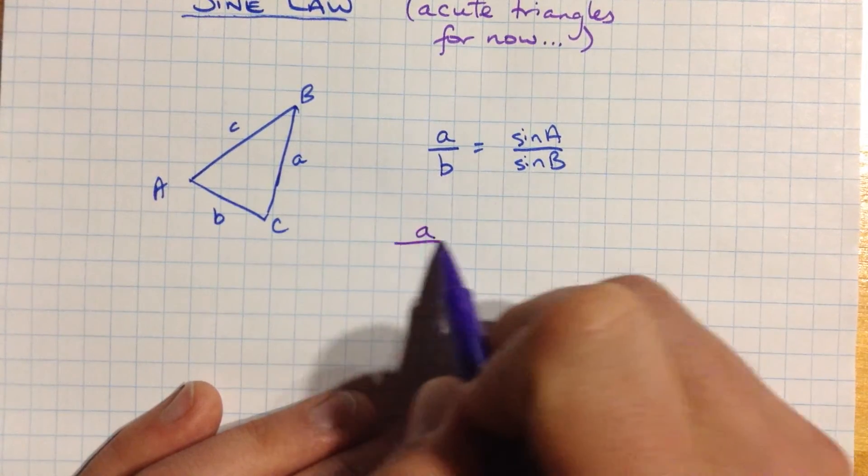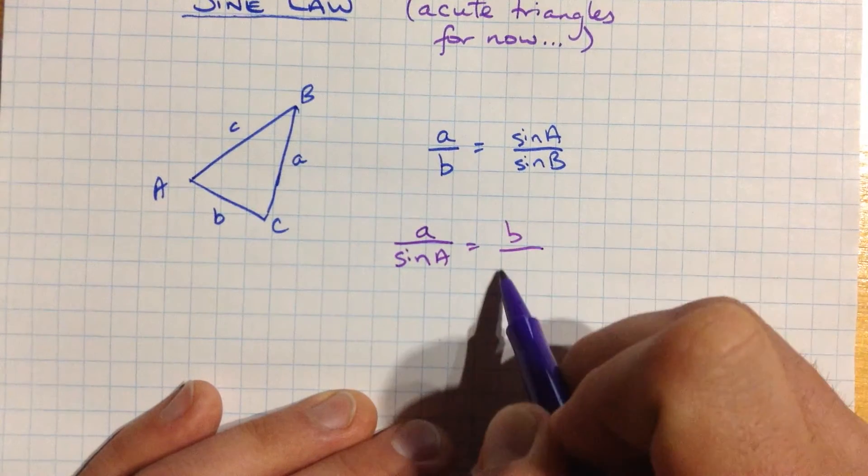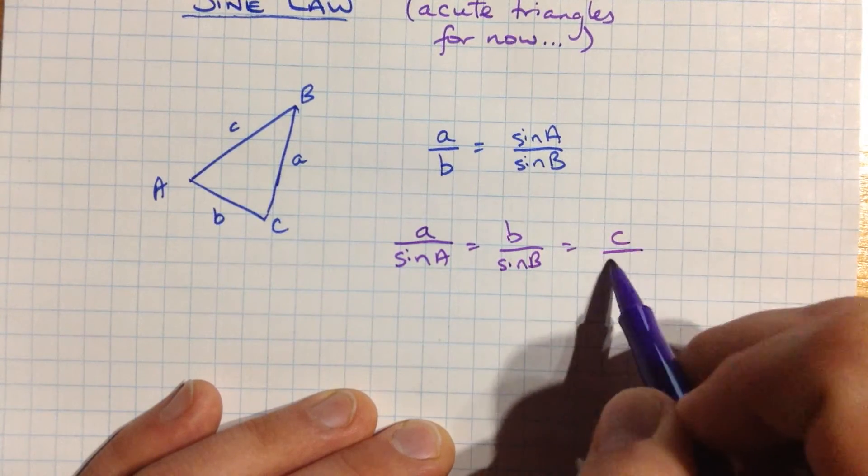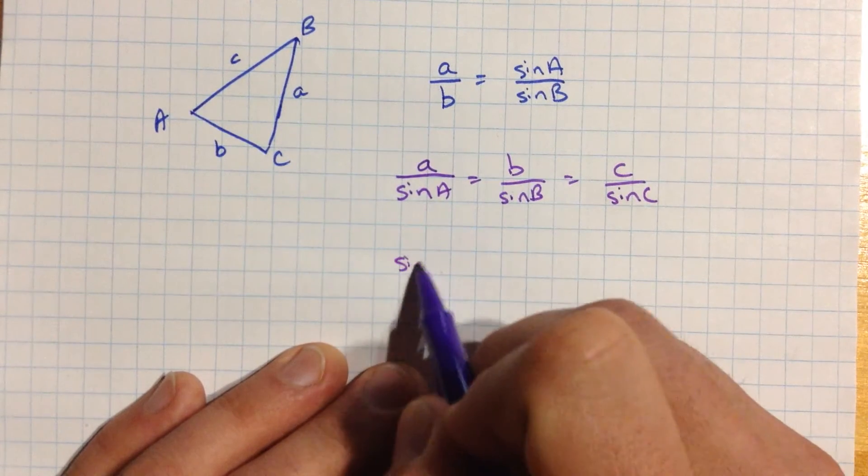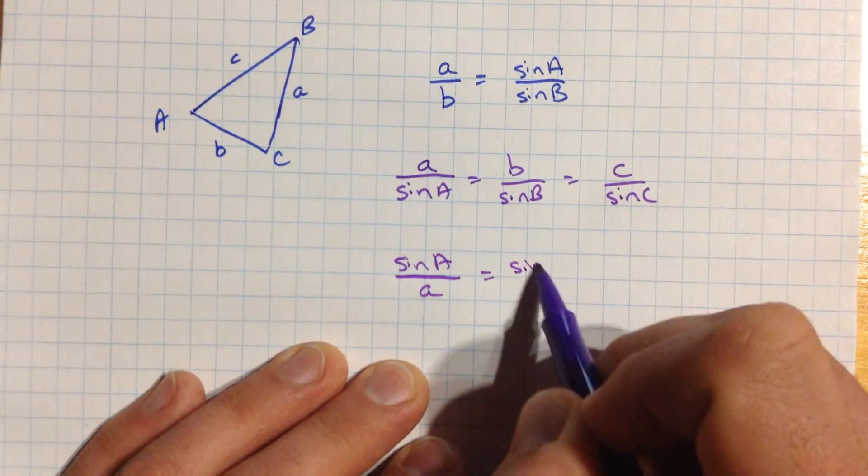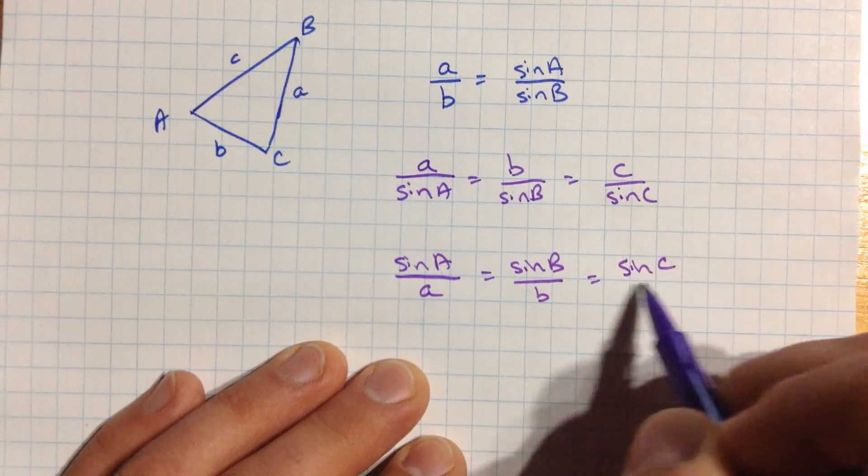We'll often write it like this: a over sine a equals b over sine b, and that also equals c over sine c. And then we can also flip these. So we can rewrite the whole business as sine a over a is sine b over b, which is sine c over c.